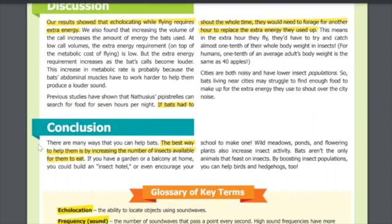Conclusion: There are many ways that you can help bats. The best way to help them is by increasing the number of insects available for them to eat. If you have a garden or a balcony at home, you could build an insect hotel or even encourage your school to make one. Wild meadows, ponds, and flowering plants also increase insect activity. Bats aren't the only animals that feast on insects—by boosting insect populations, you can help birds and hedgehogs too.